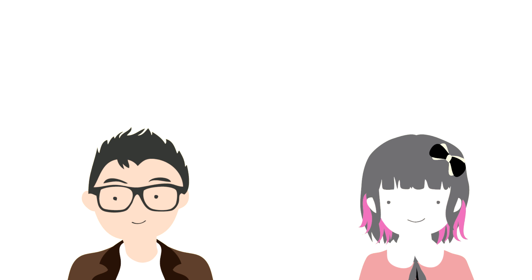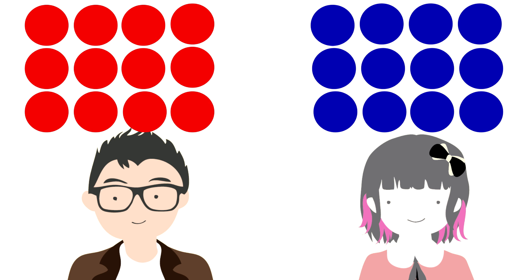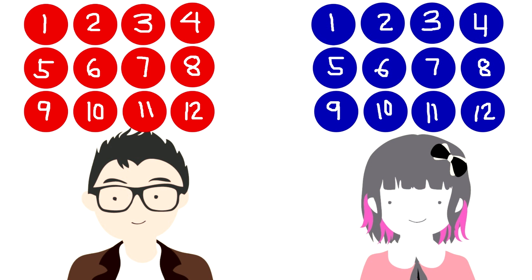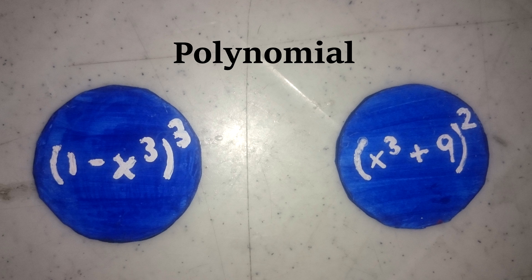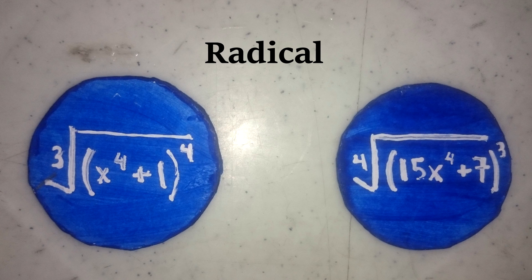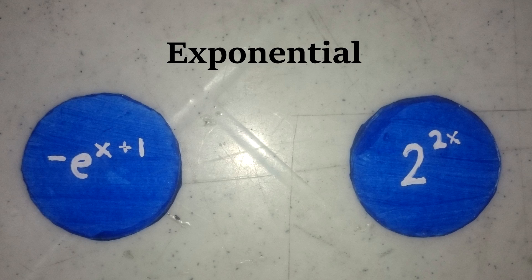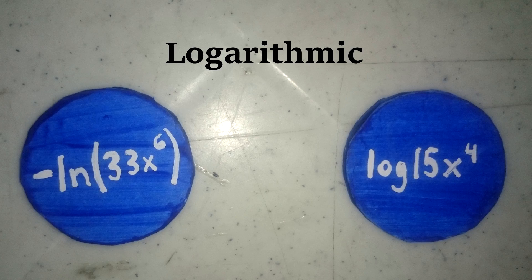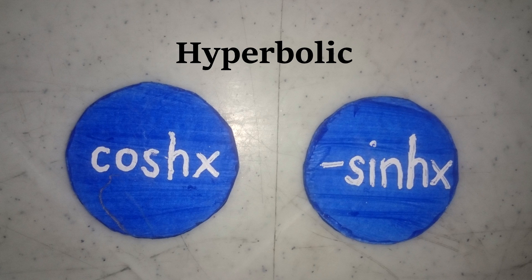The game is between two players. Each player is given 12 dama chips with different kinds of functions, which includes polynomial function, radical function, exponential function, trigonometric function, logarithmic function, and hyperbolic function.